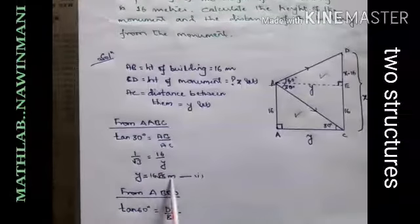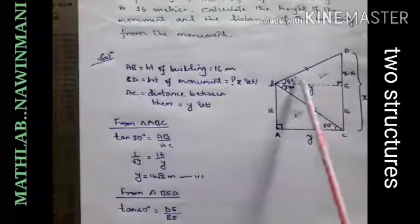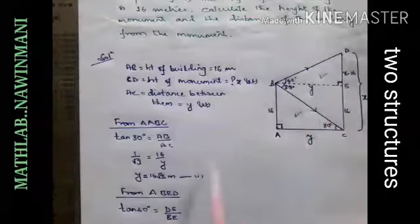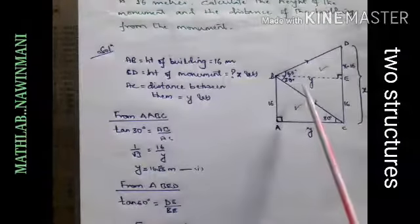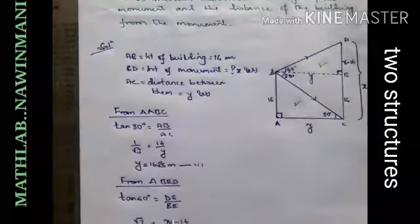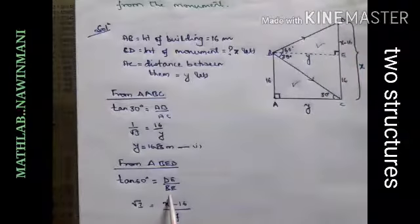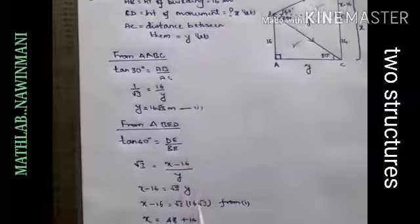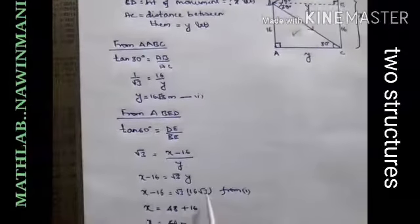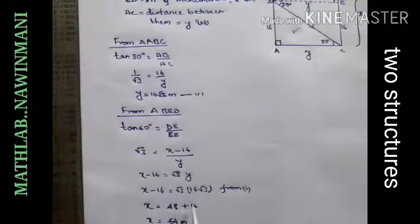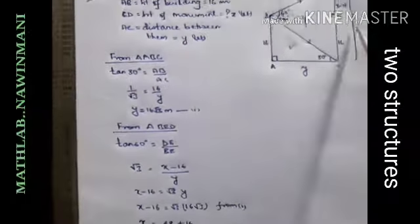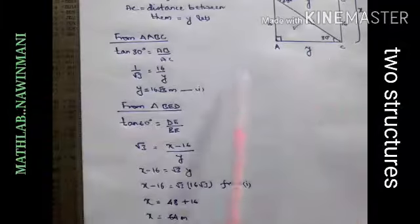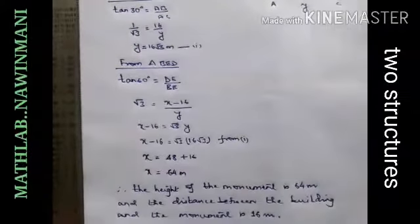Then you take this triangle BED, right angle triangle BED. This will be the perpendicular, this will be the base. We will use tan 60 perpendicular by base. tan 60 is root 3. DE is x minus 16, BE is y. Then you cross multiply. y's value is 16 root 3. root 3 into root 3 is 3, 3 times 16 is 48 minus 16 plus 16 is 64. So what is x? The height of the monument is 64 meters and y is the distance between the building and the monument is 16 root 3 meters.